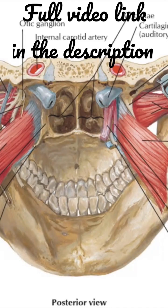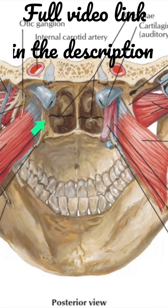This is the tensor veli palatini muscle. It takes origin from the scaphoid fossa of the medial pterygoid plate. This is the medial pterygoid plate, and here you will have the scaphoid fossa.